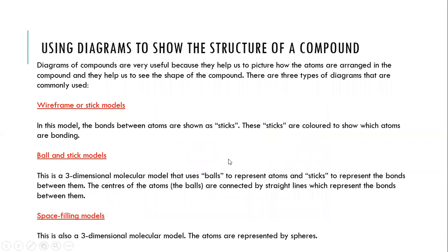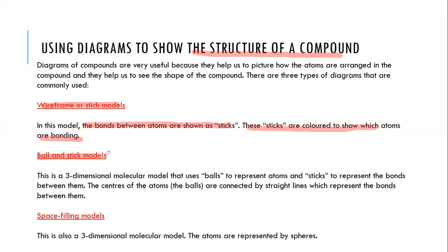Sometimes we use diagrams instead of structural formulas to show the structure of a compound. For example, wireframe or stick models — bonds between atoms are shown as sticks, colored to show which atoms are bonding. Each stick represents an atom: a green stick represents carbon, a yellow stick represents oxygen, a purple stick represents hydrogen. In ball-and-stick models — one of the most common — balls represent atoms and sticks represent bonds like in Lewis diagrams. If the atom is bigger, the ball is bigger. The center of atoms are connected by straight lines representing the bonds.